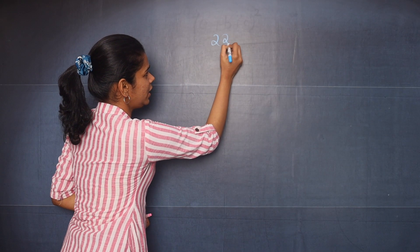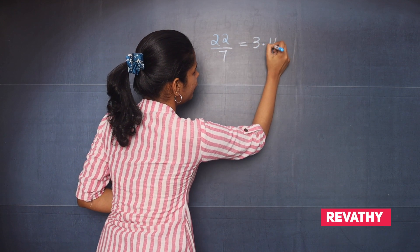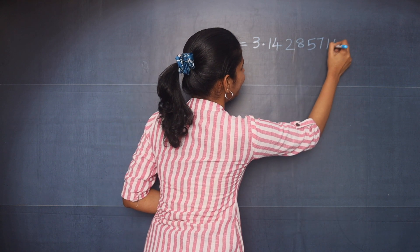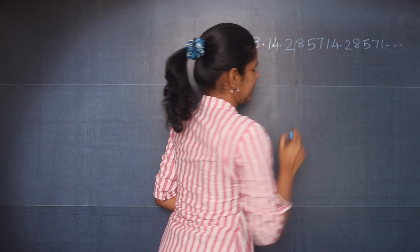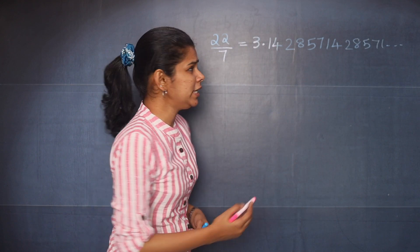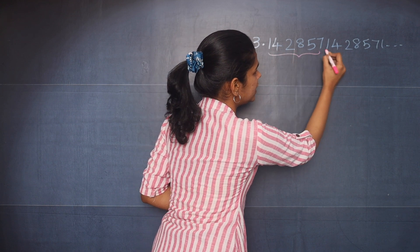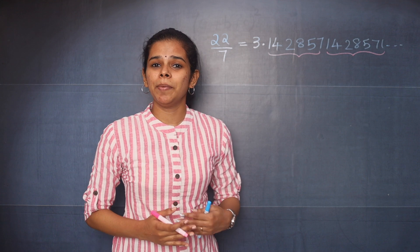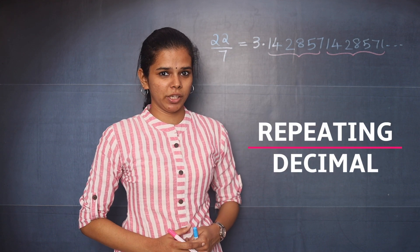22 by 7 is equal to 3.1428571428571... and so on. Did you notice that after the decimal point, six digits are repeating? What kind of decimal expansion is this? This is a repeating decimal expansion.